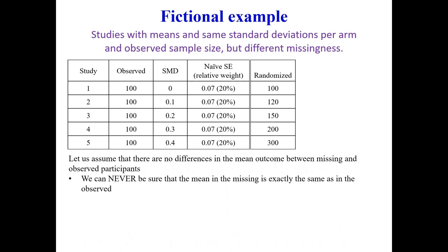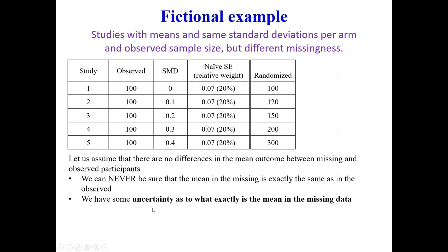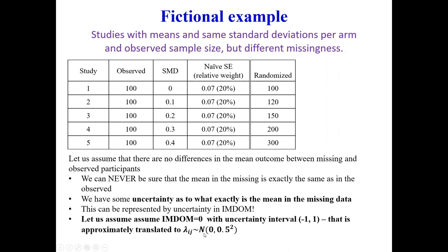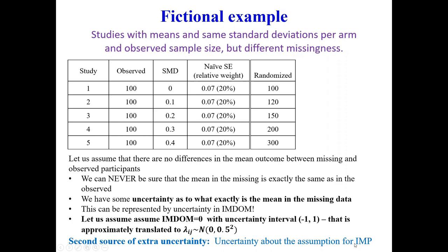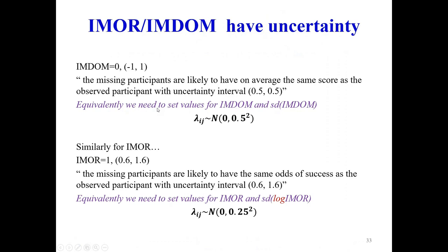Suppose I believe that observed and missing participants have the same mean value, so the expected value of the informative missing parameter is zero. But I want some uncertainty around this, so lambda follows a normal distribution with mean zero — meaning missing and observed participants have the same outcome on average — and some small variance. This variance of lambda is incorporated into my effect estimate as an additional source of uncertainty about the assumptions we make for the informative missingness parameter.